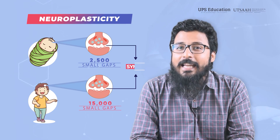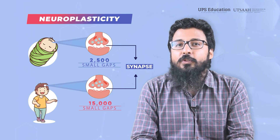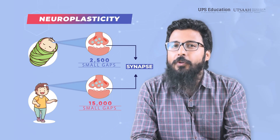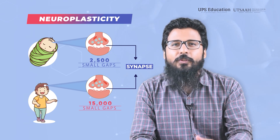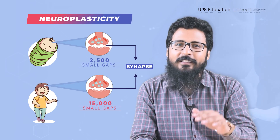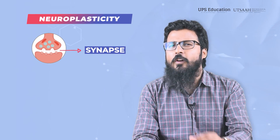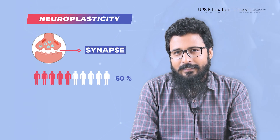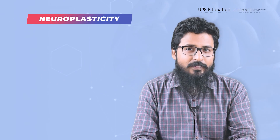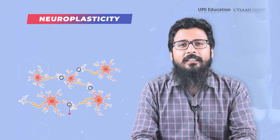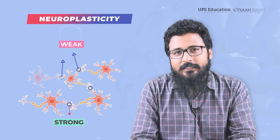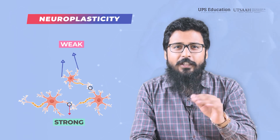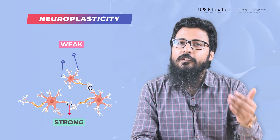These small gaps are called synapses, and neurotransmitters function at synapses. The tiny gap found between two neurons is a synapse, and all neurotransmitters function here. However, the number of synapses in the average adult is just half of the higher limit, because some connections get stronger and others weaker as we acquire new experiences and learn new things.